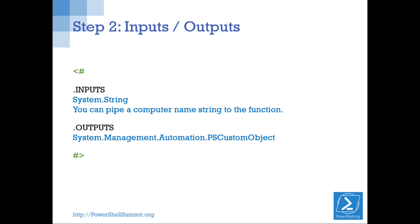The next thing I do are inputs and outputs. Some people skip these — I think they're essential. Often what I want to do, once I've gotten something from your cmdlet, is pipe it to something else. If I don't know the output type, I have to go looking before I can set up my piping. You have shifted the burden from the person who knows the function best to a user who's busy. So do the inputs and outputs — it'll take you a minute and save people a lot of time.